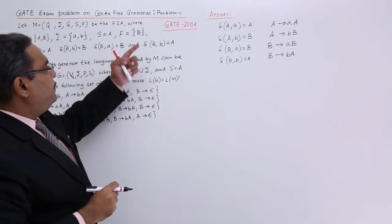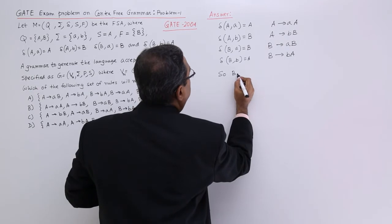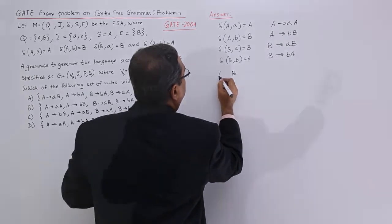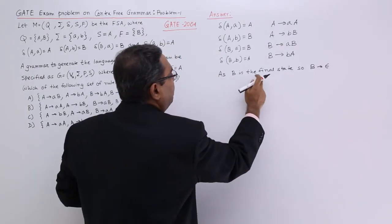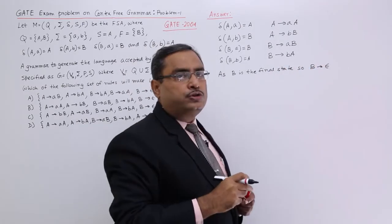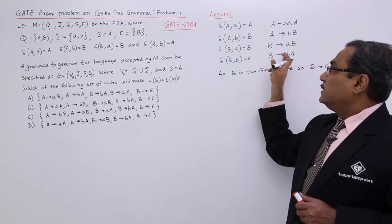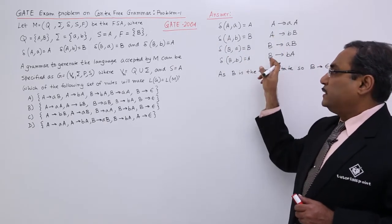Which is the final state? B. As B is the final state, B produces epsilon will be also another production. These are the transitions and the respective production rules.